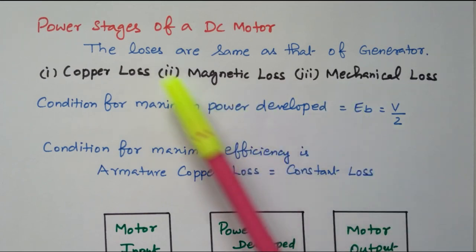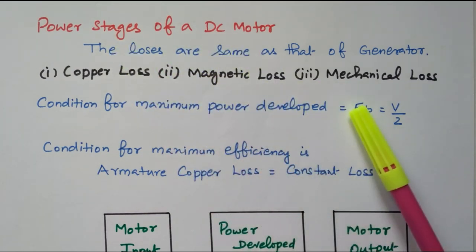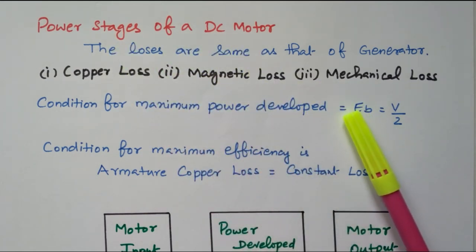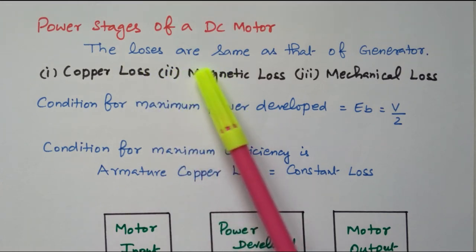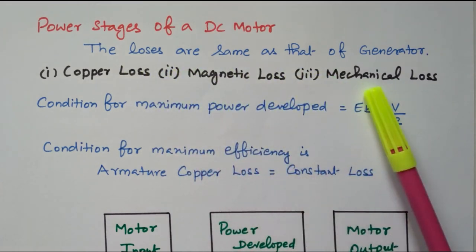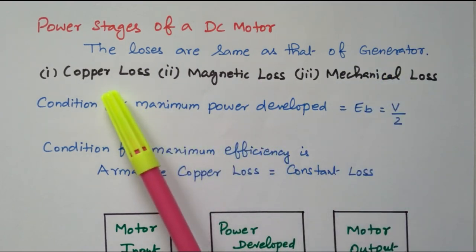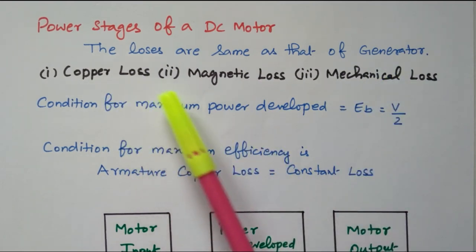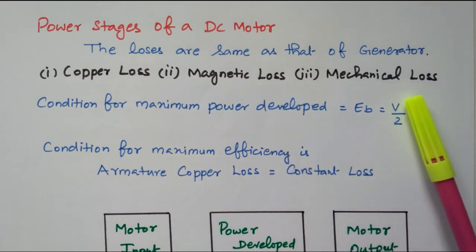Now we will go to the topic: power stages of a DC motor. Before going to the power stages, we see the losses. What are the losses available in the generator or motor? Both are same. So we have three different losses available: copper loss, magnetic loss, and mechanical loss.